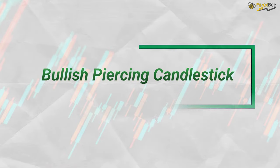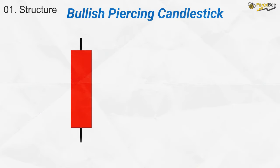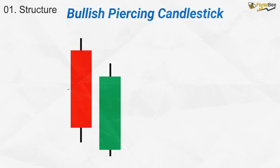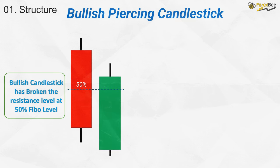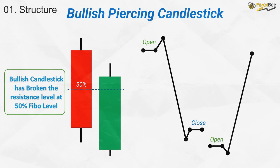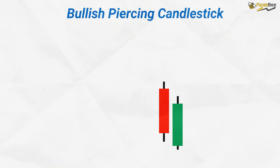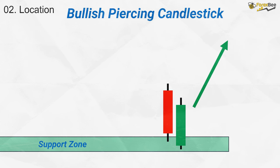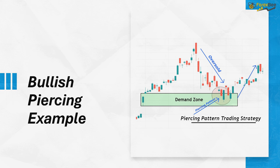Now, let's dive deeper into the bullish piercing candlestick pattern. This pattern is made up of two candlesticks. The first is a bearish candle and the second is a bullish candle that opens with a gap down, but closes above the 50% mark of the previous candle's body. This pattern reflects a shift in market sentiment where buyers begin to outweigh sellers, leading to a price reversal. The bullish piercing pattern often forms at key support or demand zones, signaling a potential bullish reversal. In the example, the pattern occurs at a demand zone, indicating the downward trend is weakening.